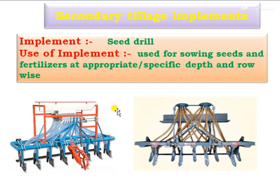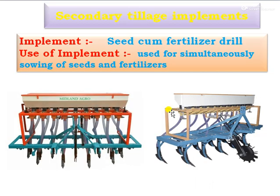Then this is the seed drill — a single-bowl or two-bowl type. This is animal-operated or animal-drawn. The two-bowl is a seed-cum-fertilizer drill, which is useful for sowing of seeds as well as fertilizer at appropriate time and depth, in a row-wise manner. This is also available as a mechanized or tractor-operated seed drill.